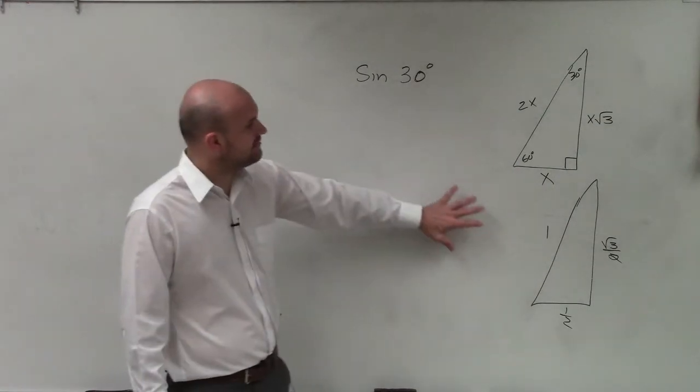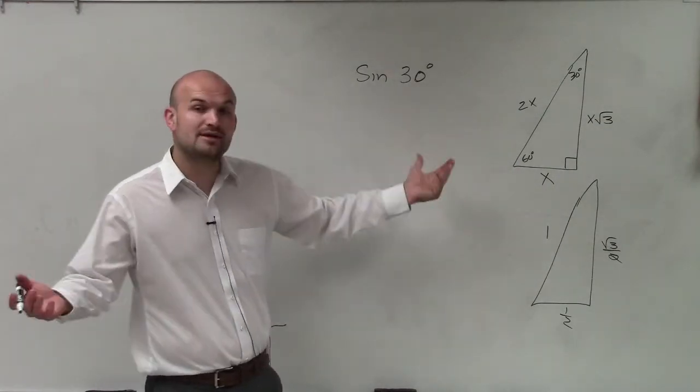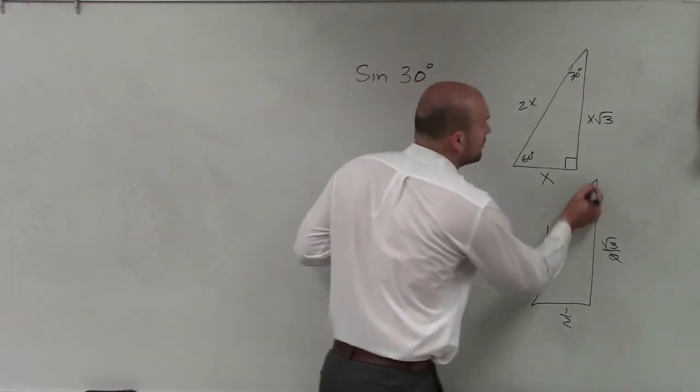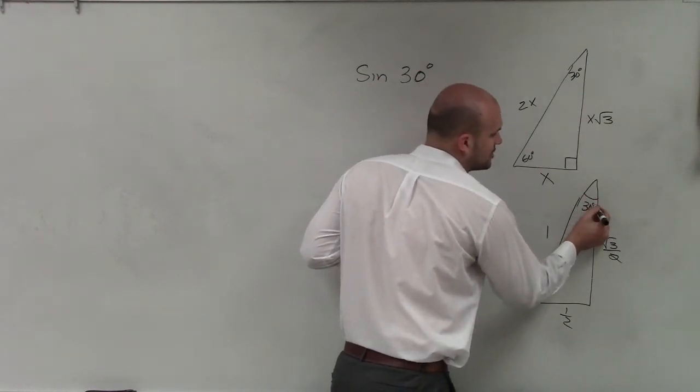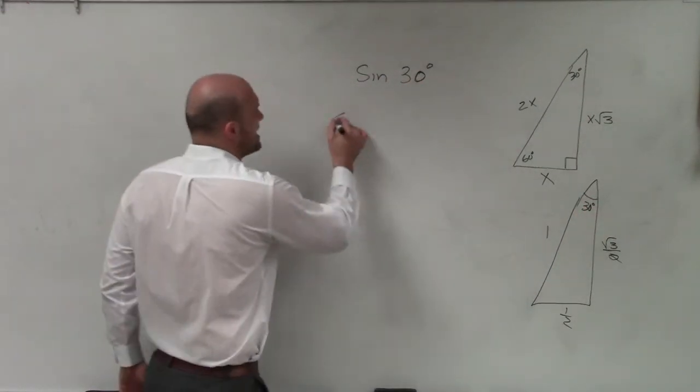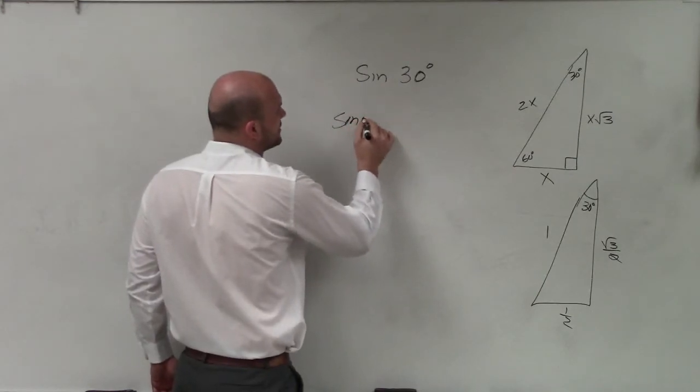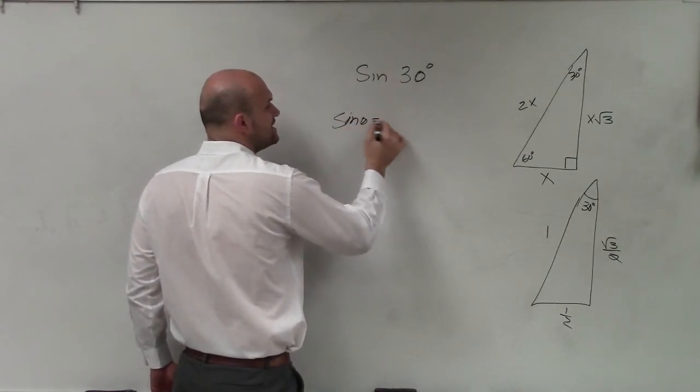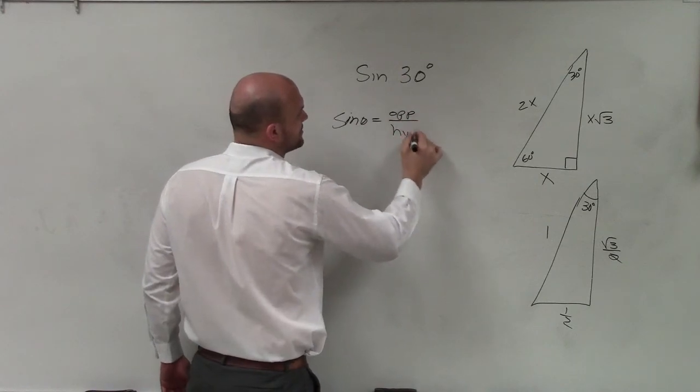But one thing that they're asking for is the sine of 30 degrees. So now we need to determine where 30 degrees is. Well, we're talking about 30 degrees is up here. So remember, 30 degrees, or sine of any angle, is equal to opposite over hypotenuse.